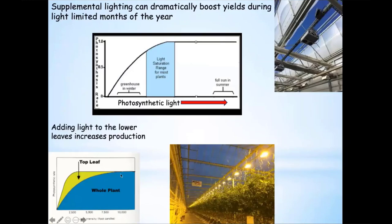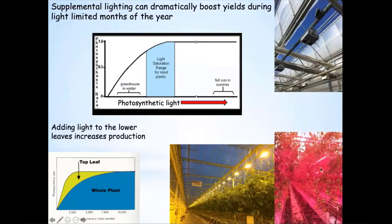LED lights embedded right in the plant canopy: when we put light overhead, we increase photosynthetic capacity mainly in the top of the crop. We still don't get great penetration deep down into the vertical canopy, so the lower leaves are not as productive as they can be. By embedding an LED light strand down there, we can increase overall whole-plant productivity — rather than just the top leaves, we're boosting the overall productivity of the whole plant and greatly affecting that yield capacity.